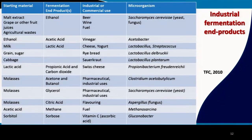This slide shows examples of industrial and commercial applications of fermentation. The starting material is in the first column, fermentation end products in the second, industrial applications in the third, and the responsible microorganism in the last column. For example, beer production starts with malt extract, the fermentation product is ethanol, and the mediating organism is Saccharomyces cerevisiae — a yeast or fungi. Grape or other fruit juices are used for making wine, again producing ethanol via the same fungi.